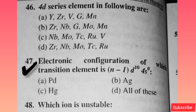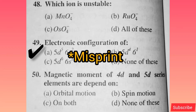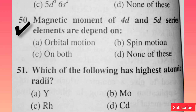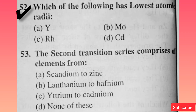Electronic configuration of which transition element is (n-1)d10 4s0? Option A is correct. Which ion is unstable? Option A is correct. Electronic configuration and magnetic moment of 4D and 5D series elements depend on — option C is correct. Which of the following has the highest atomic radius? Option A is correct. Which of the following has the lowest atomic radius? Option C is correct.